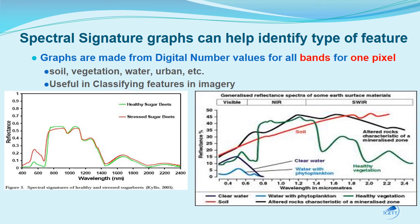We can create graphics called spectral signature graphs that help identify the type of feature you're looking at. Each graph is made from the pixels across all the bands — for Landsat 8 that's eight separate values per pixel — and you graph those reflectance values versus wavelength. You can then identify healthy versus stressed crops, soil, water, healthy vegetation, and altered rocks, providing a way to look at your data and identify different surface types.